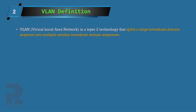At layer 2, the VLAN technology was designed to solve this problem. VLAN is an acronym for Virtual Local Area Network. It is designed to logically split a large broadcast domain into smaller broadcast domains in order to isolate traffic between them, thereby improving security and reducing network and device resource waste.